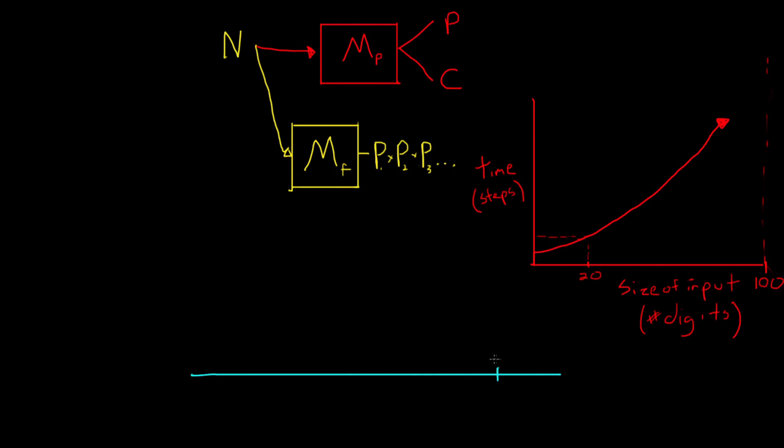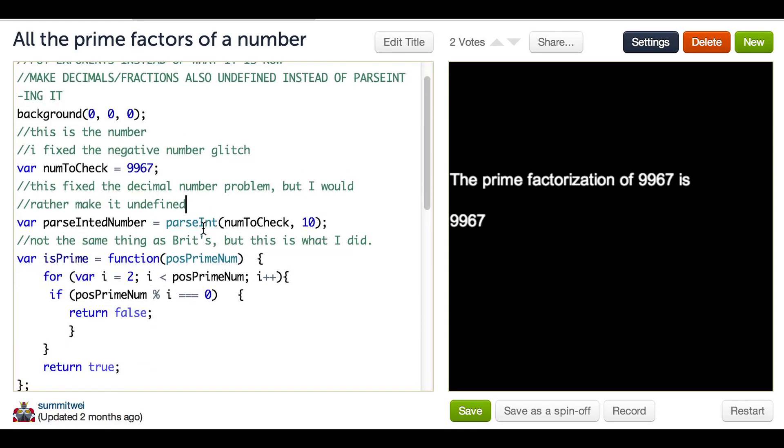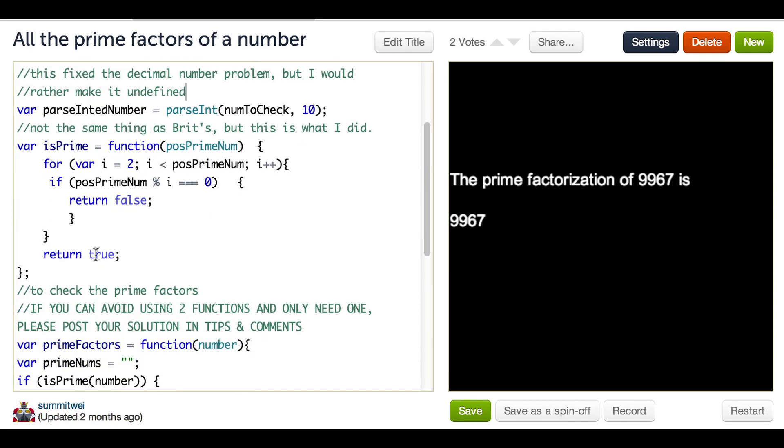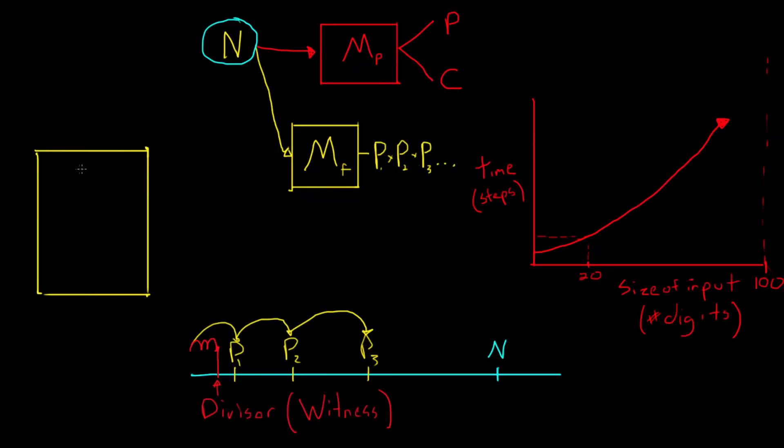Since, remember, factorization requires us to find all the prime factors for some input N. Whereas a primality test only requires that we find one divisor. And a nice reminder of this is that some users have actually turned these primality tests into prime factorization algorithms simply by repeating after it finds its first divisor. So the primality test is just kind of a subroutine inside the main factorization algorithm.